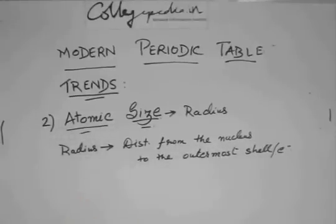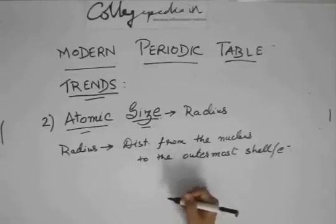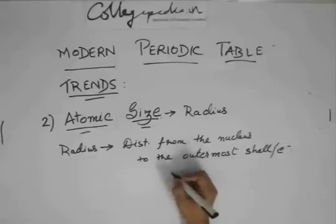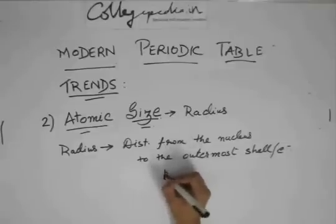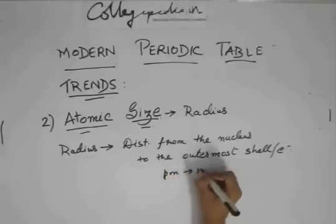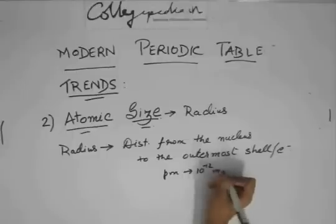This is a very potential question: what is the unit of measurement of radius of an atom? It's picometers, and with picometers you have to write it's equal to 10 to the power minus 12 meter.